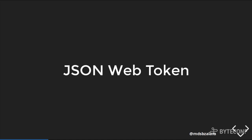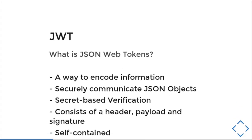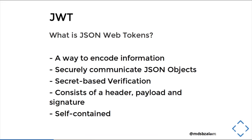Let's understand what is a JSON Web Token. A JSON Web Token is a way to encode information, and it is said that it is secure to communicate JSON objects. It is a secret-based verification. Once you sign your authentication, it needs a secret and it consists of a header, payload, and signature. The best part of JWT is that it is self-contained — it does not require any other software to decode or encode it.